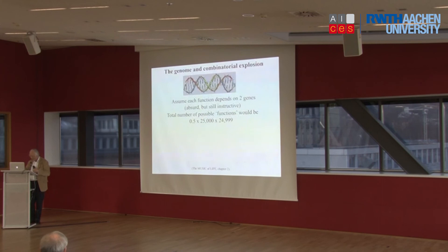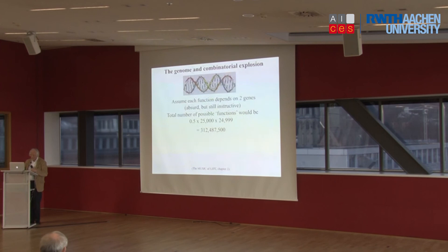That, incidentally, is the number of double knockout strains of mice you would need in order to investigate all of those interactions — and we will never make 300 million separate strains of mice. But it gets worse if you make the assumptions even more realistic.